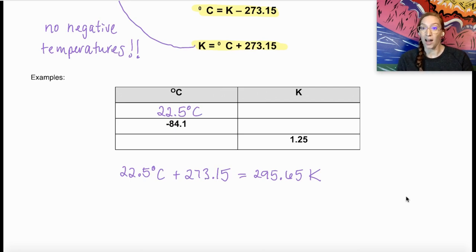This is not to the proper number of significant figures or decimal places. When we round, 22.5 has one decimal place. 273.15 has two. Technically, that's a conversion factor, so we want to make sure that we're not really using that to determine sig figs. I want to round to one decimal place. The five tells me I want to round up. And that means I'm going to round this to 295.7 Kelvin.